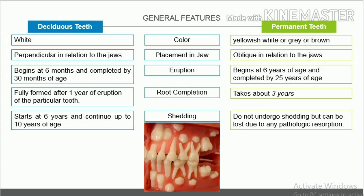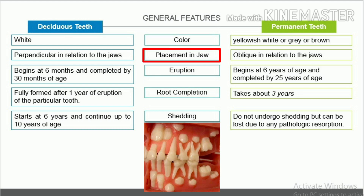Color. Deciduous teeth are white because the enamel is less mineralized and opaque, so it does not reflect the color of the underlying dentin. Permanent teeth are yellowish white, grey, or brown because the enamel is more mineralized and translucent, so it reflects the color of the underlying dentin.